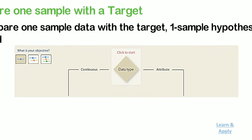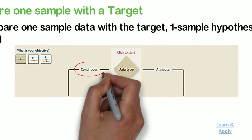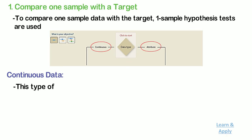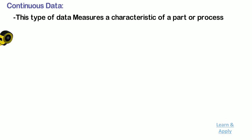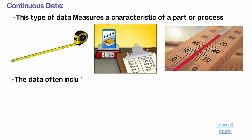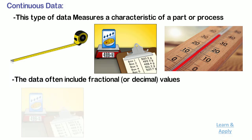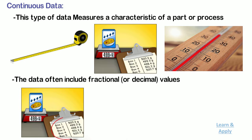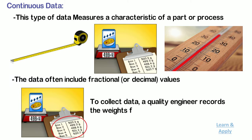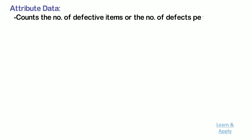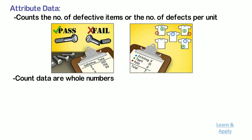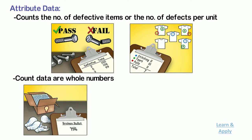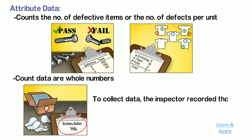The first selection criteria for a one-sample test is the type of data. There are two types of data: continuous and attribute. Continuous data measures a characteristic of a part or process such as length, weight, or temperature, and often includes fractional or decimal values. For example, a food manufacturer wants to investigate whether the weight of a cereal product is consistent over time, so a quality engineer records the weights from a sample of cereal boxes. Attribute data counts the number of defective items or the number of defects per unit — count data are whole numbers. For example, inspectors for a light bulb manufacturer want to track the number of broken bulbs (defective items) over time; they examine each bulb from a sample, assess whether it is broken, and record the number of broken bulbs in each sample.